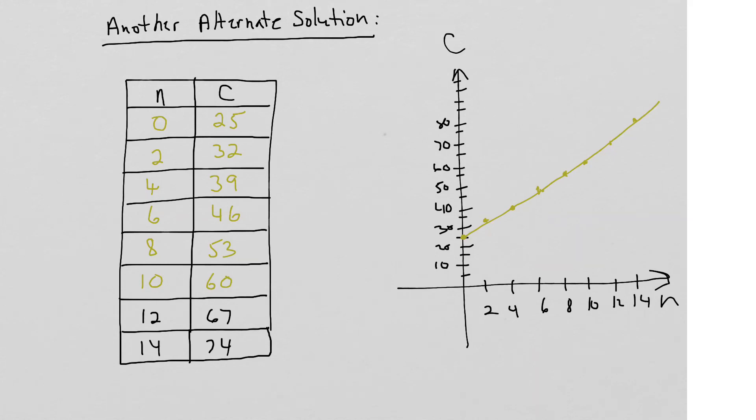And again, because the graph does not go through the origin here, it starts as a y-intercept above there at some value, then this is partial variation. And there you go. There's some solutions that could have been used to solve this problem.